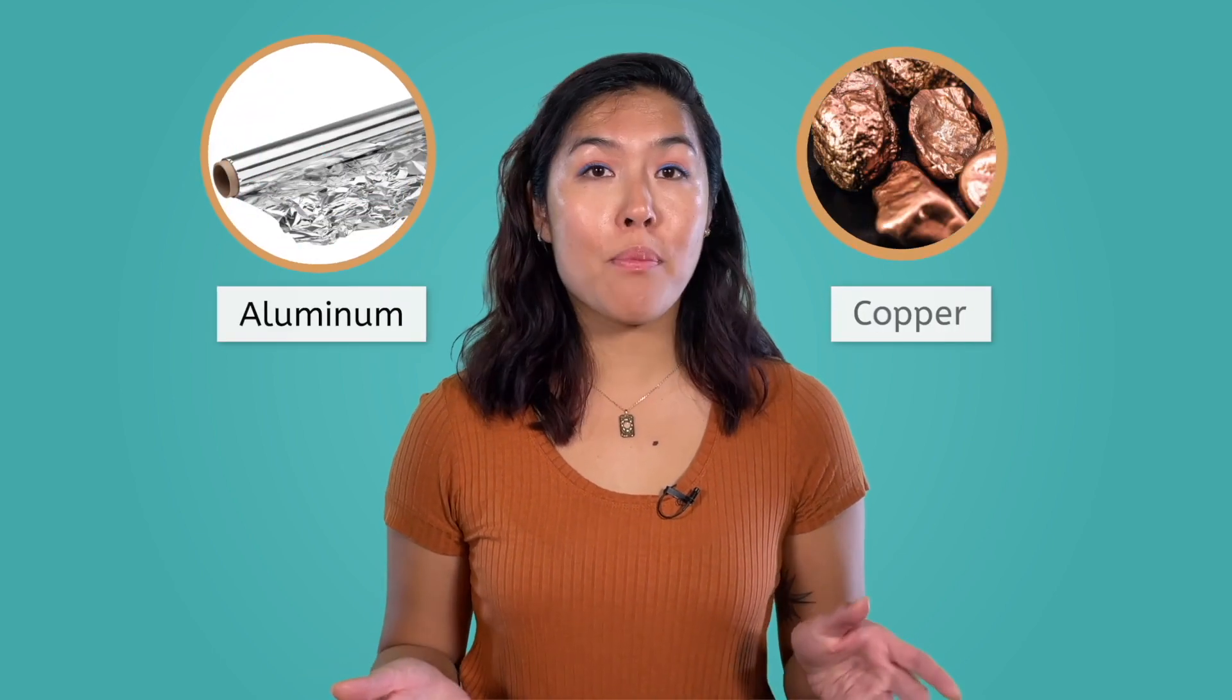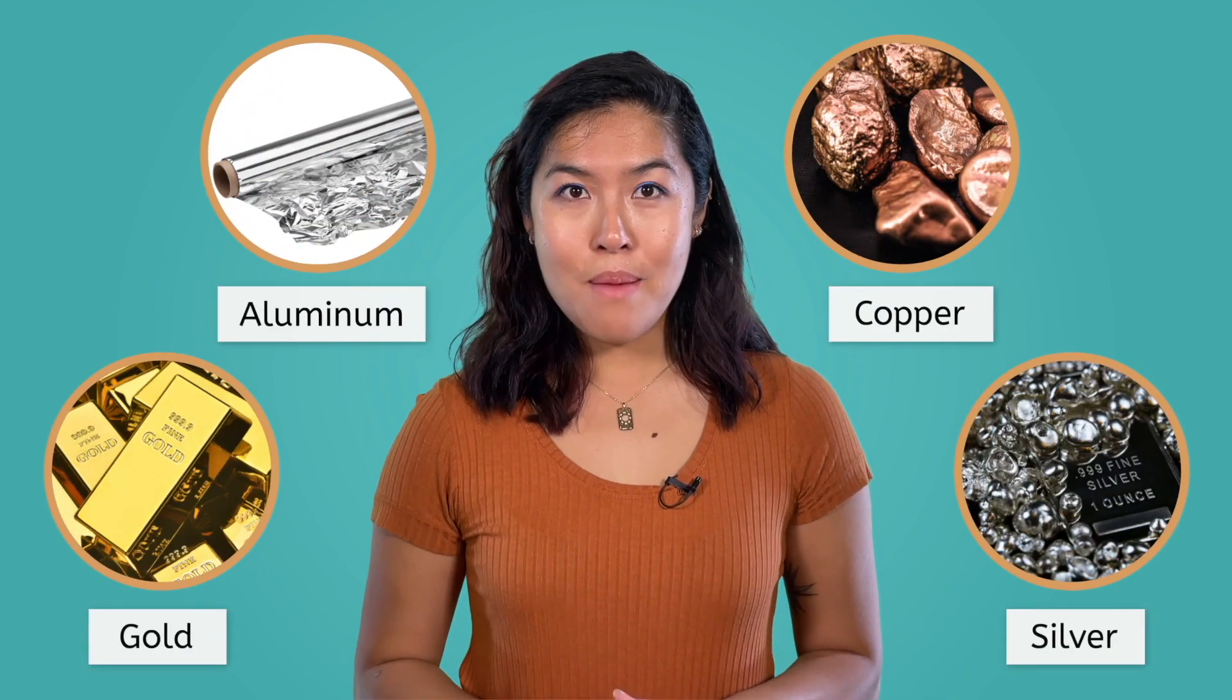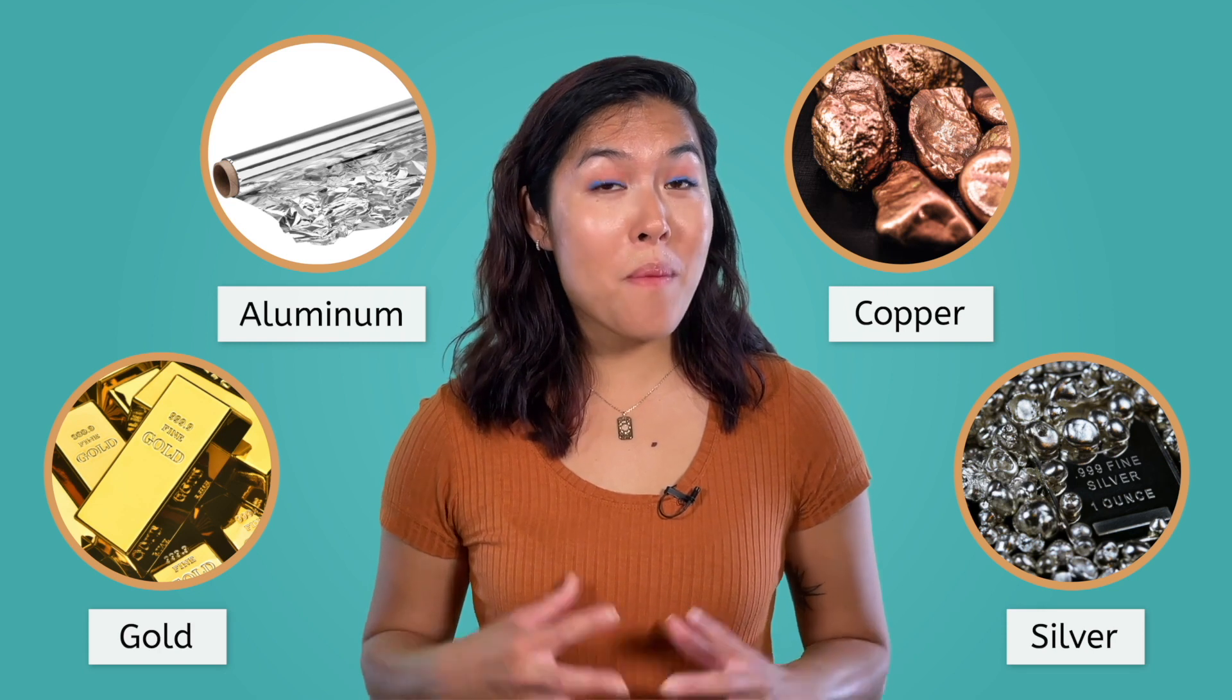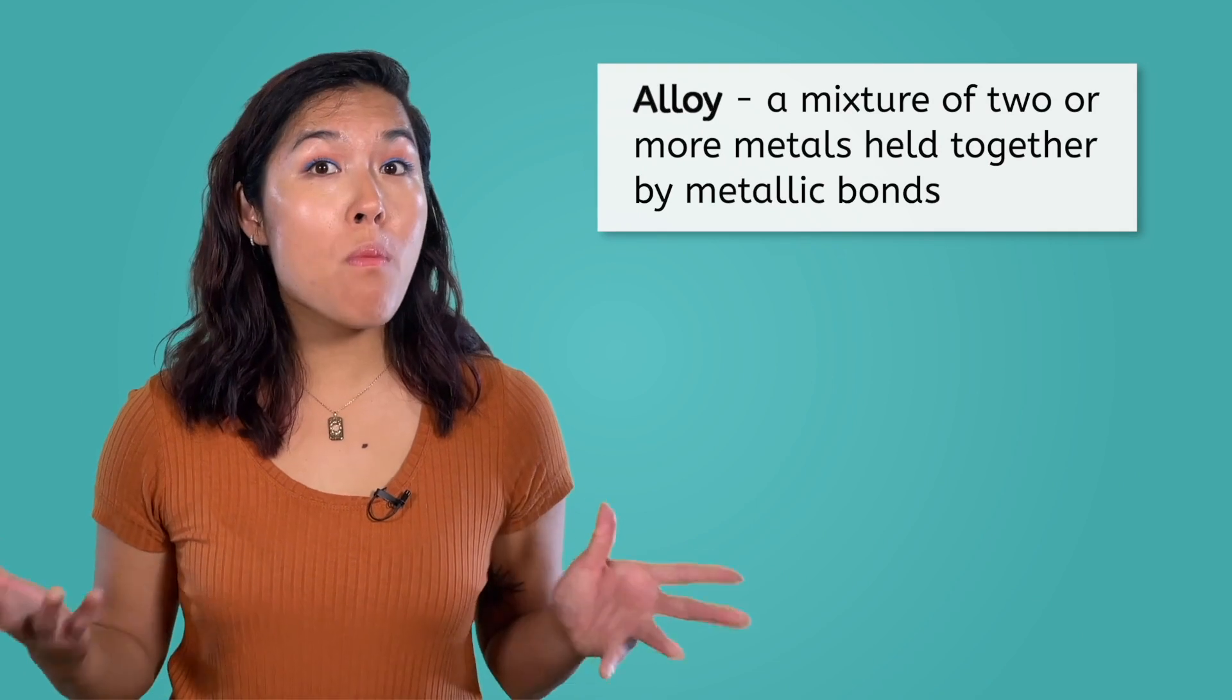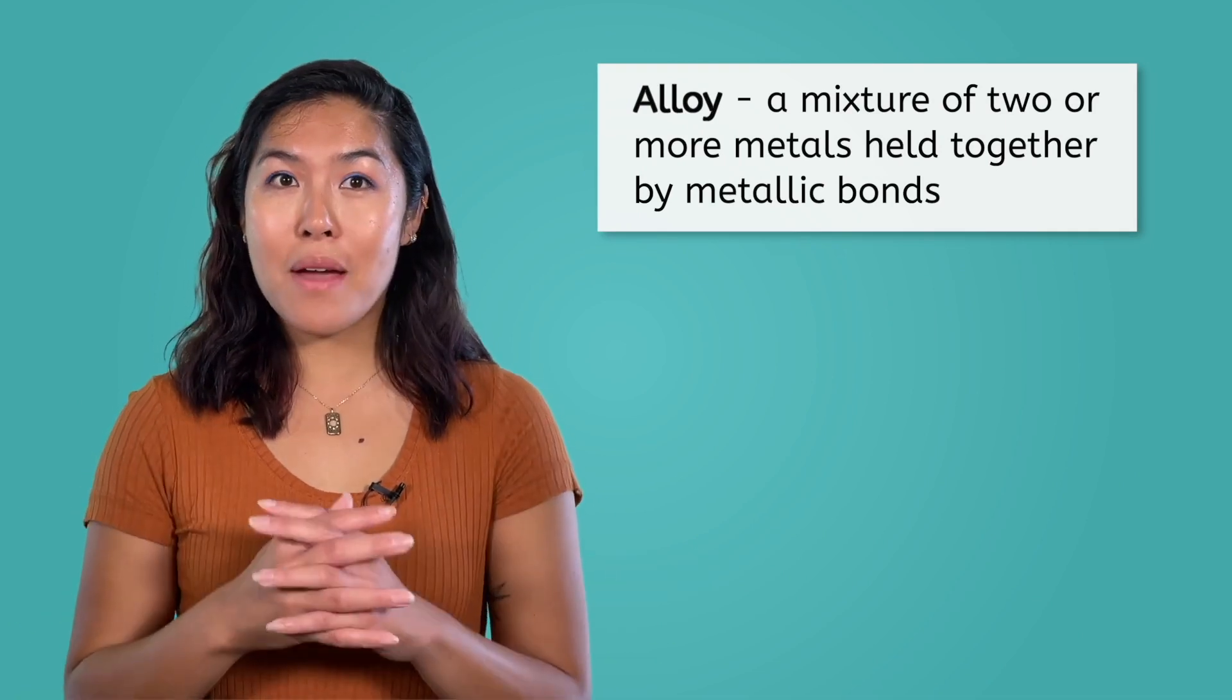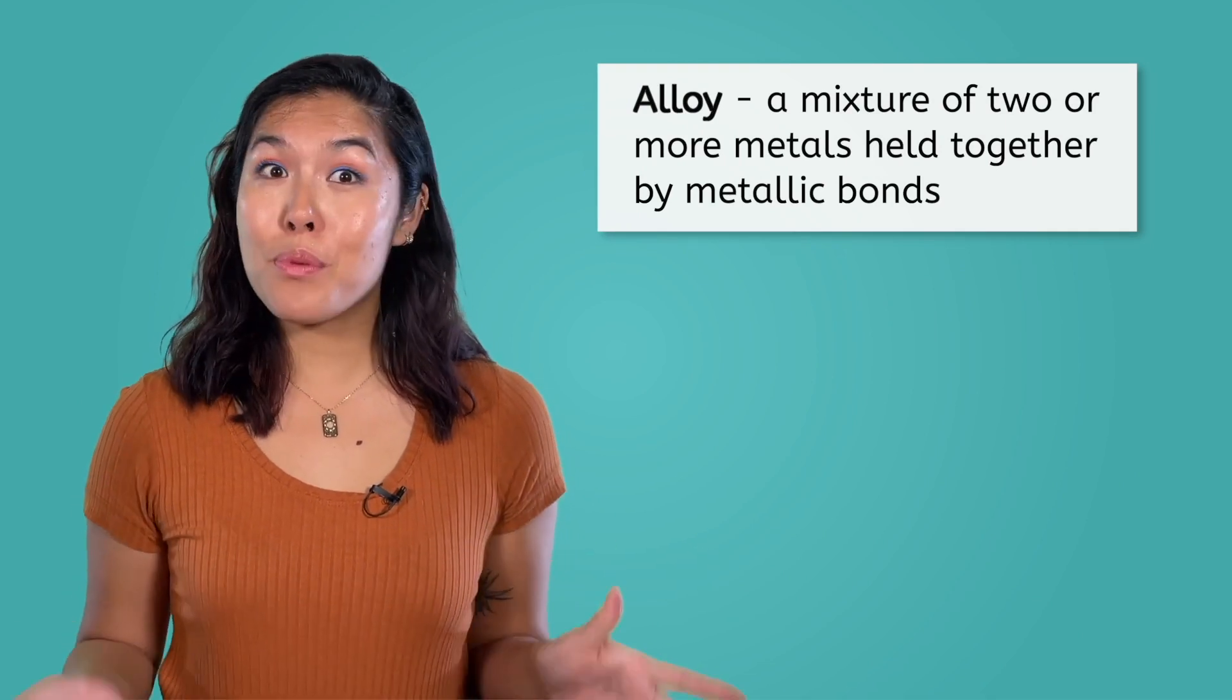Often, when people think of metals, they think of pure substances like aluminum, copper, gold and silver. But metals can also form mixtures or alloys. An alloy is a mixture of two or more metals held together by metallic bonds, same as a pure metal.